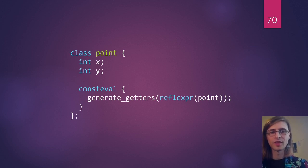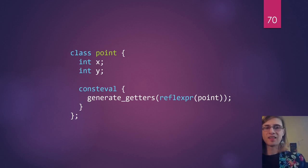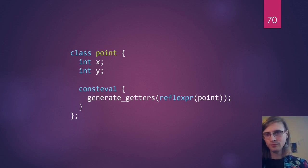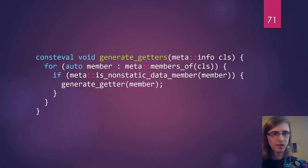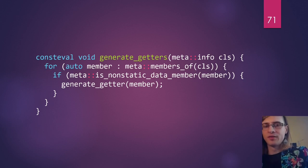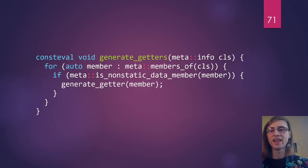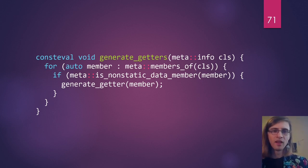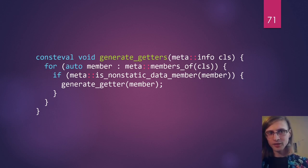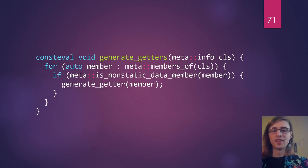It would look something like this: a 'consteval' block just says to run this part of the program at compile time. We pass the reflection of Point to a 'generate_getters' function, which will inject our getter functions. 'generate_getters' is a function that takes a 'meta::info' object — the type that 'reflexpr' generates, representing the type, member, or any entity we can describe. We loop over all of the members, and if a member is a non-static data member, we generate a getter for it. 'is_nsdm' is just a compile-time predicate on the reflection information.